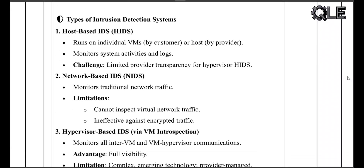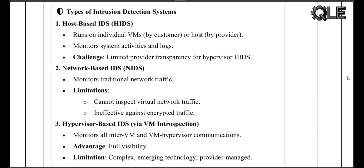Types of intrusion detection systems: Host-based IDS (HIDS) runs on each VM by the customer, or on the host by the provider. It monitors system logs and activities. A key limitation is that customers can't easily see what the hypervisor sees. Network-based IDS monitors traditional network traffic between hosts, but cannot inspect internal virtual network traffic and is less effective against encrypted communications.